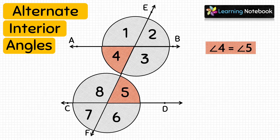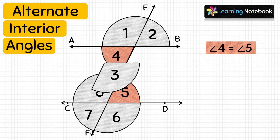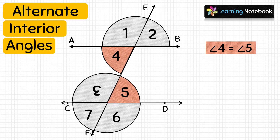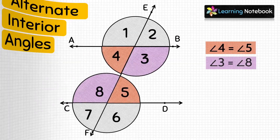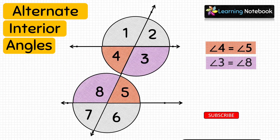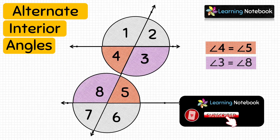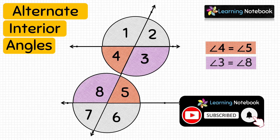Now let's place angle 3 on angle 8. We find that angle 3 completely covers angle 8, so the second pair of alternate interior angles are also equal. We have proved that the pairs of alternate interior angles made by a transversal are equal.